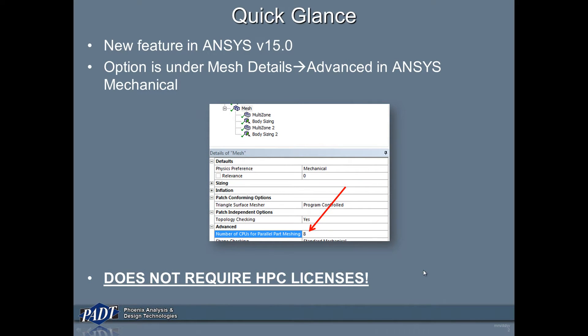Parallel Part-by-Part Meshing is a new feature in ANSYS version 15. ANSYS has enabled us the ability to mesh multiple parts on multiple CPU cores. The idea being, if you have eight cores, you can submit different parts to those eight cores and they can be meshed simultaneously. The option is under Mesh Details — click on Mesh in the Mesh tree, and under Advanced, there's an option for number of CPUs for parallel part-by-part meshing. You can change that from program default and put however many cores you'd like.